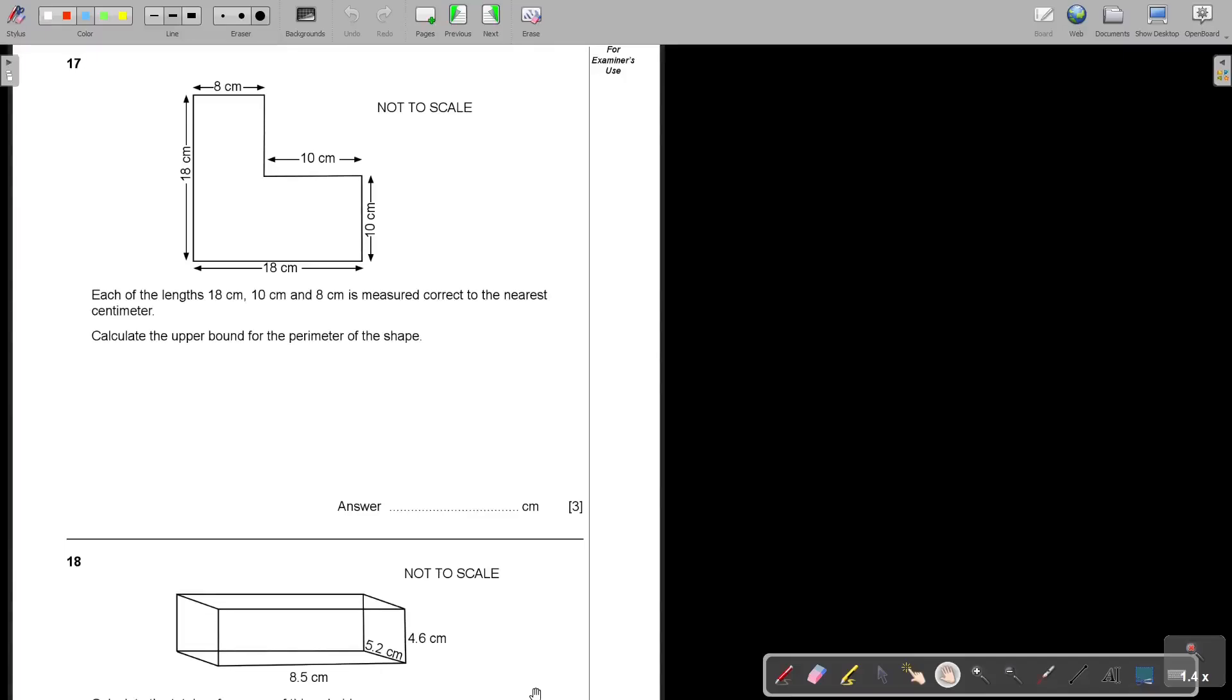Mathematics Ordinary Level Paper 1 2023, Part 3. Let's continue with the next question, Question number 17. You see a diagram, and they ask you: each of the lengths 18, 10, and 8 is measured correct to the nearest centimeter. Calculate the upper bound for the perimeter of the shape. So what jumps to your mind is limits of accuracy.